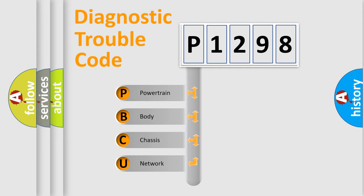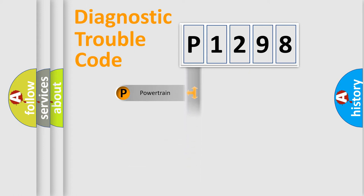We divide the electric system of automobile into four basic units: Powertrain, body, chassis, and network. This distribution is defined in the first character code.